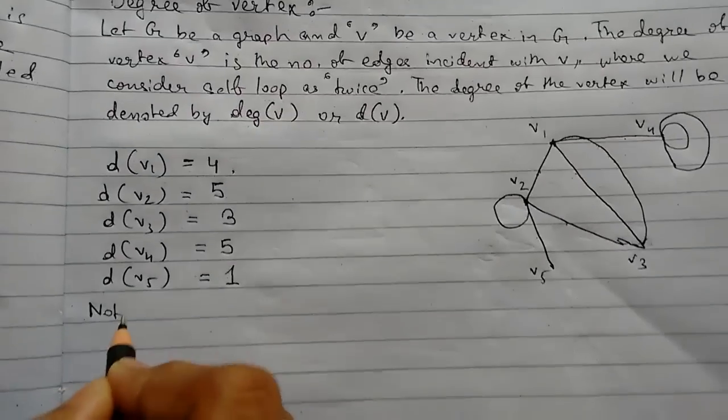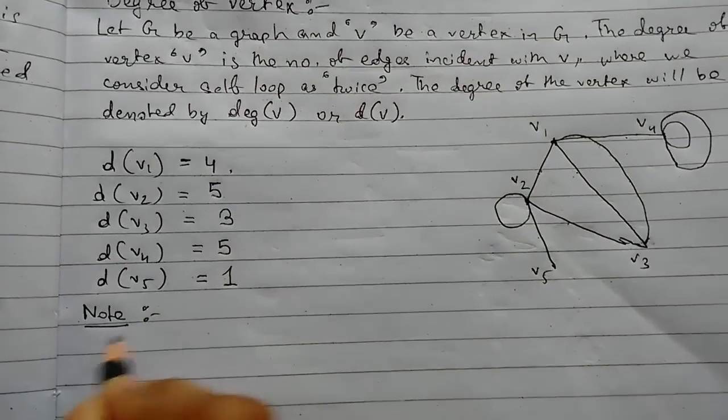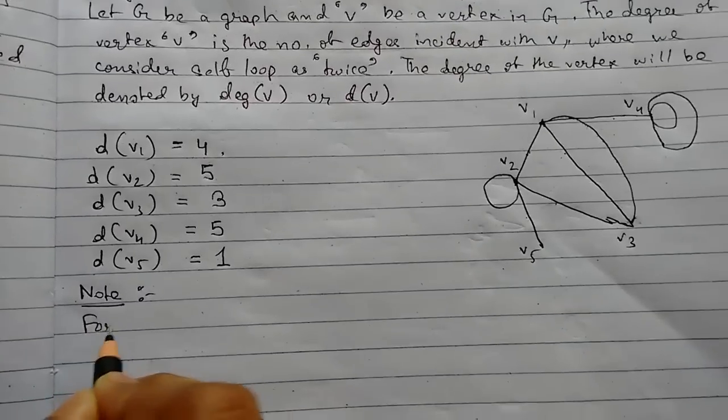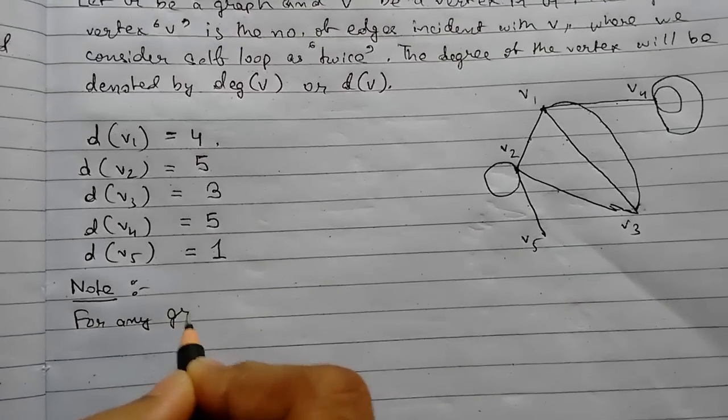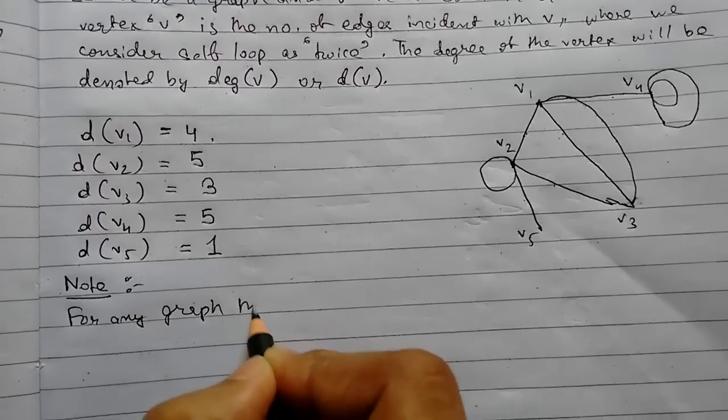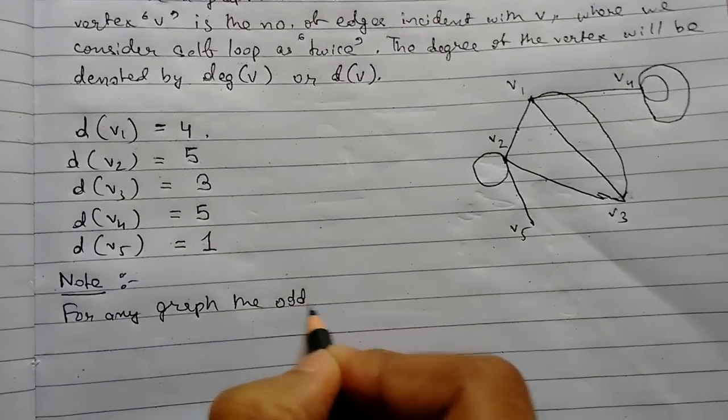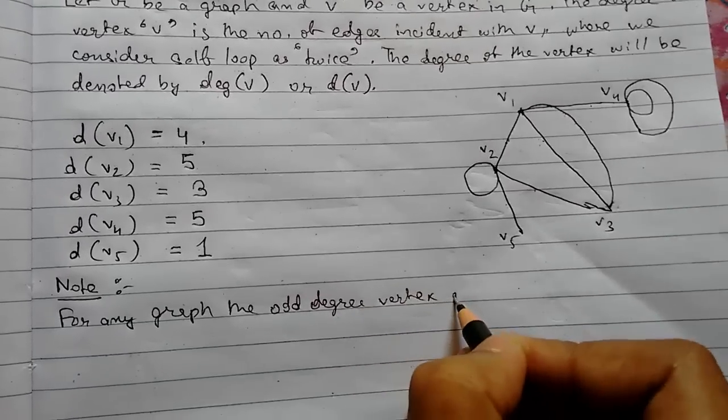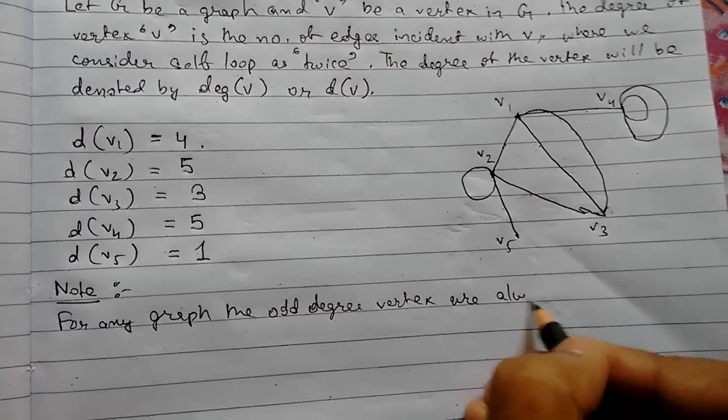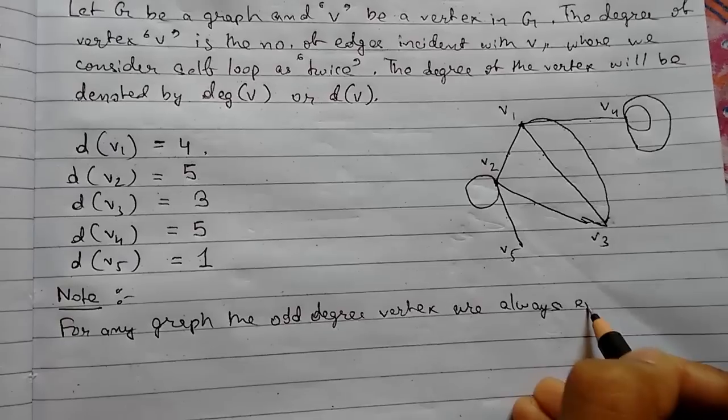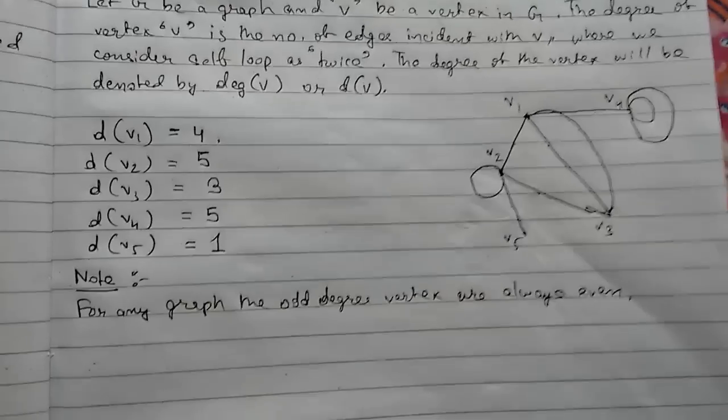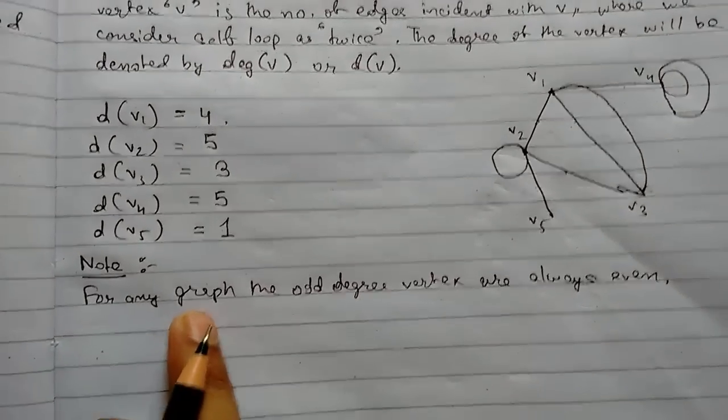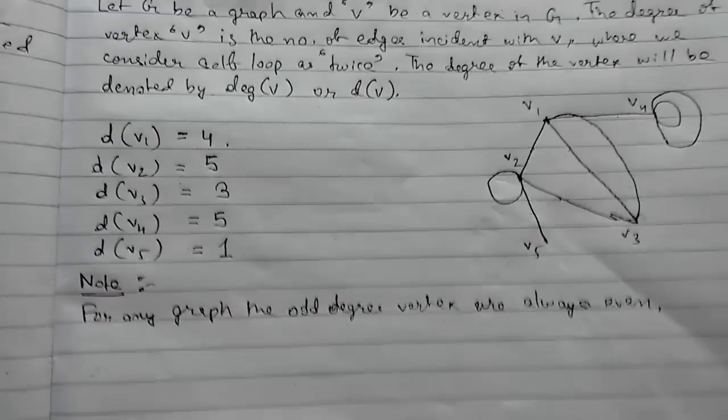So there is something to note. For any graph, the odd degree vertices are always even. So this is the note. And there will be a theorem which I will prove afterwards for this.